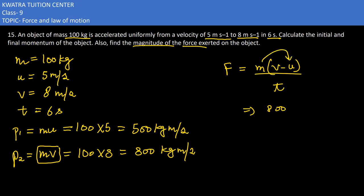What is m into u? It is 500. So 800 minus 500 divided by 6. So 800 minus 500 would be 300, 300 divided by 6 would be 50. 50 Newton. So what amount of force is exerted on the object? It would be 50 Newton in total.